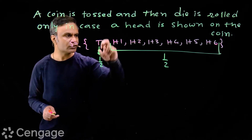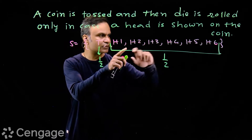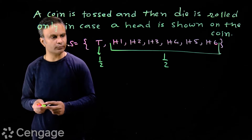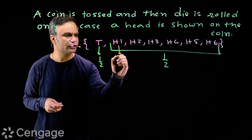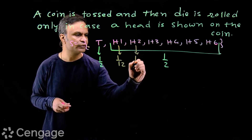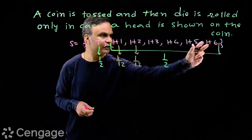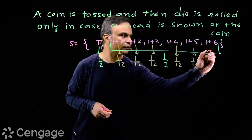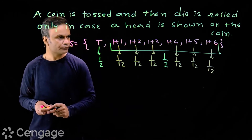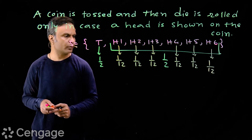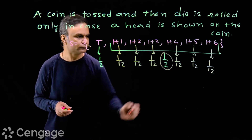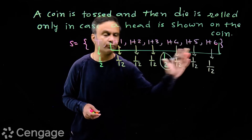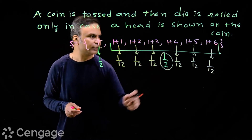So the sum of these 6 events is half. Here each of the 6 events is equally likely, so the probability of each event is half divided by 6, that is 1 upon 12. So probability of H1 is 1 upon 12, probability of H2 is 1 upon 12, and probability of each event here is 1 upon 12. Let us assign the probabilities: 1 upon 2 for tail, and 1 upon 12 for each of H1 through H6. The sum of these 7 probabilities is 1.